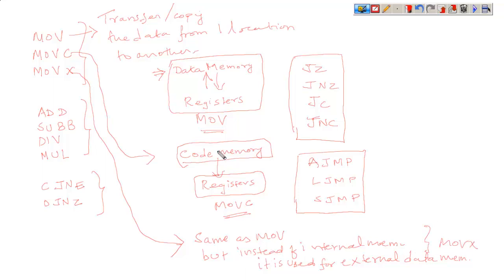We use MOVE X. The attribute is the same as MOVE, except that here the data memory refers to internal memory. In case of MOVE X, it refers to external memory. Is that clear? So MOVE, MOVE C, and MOVE X.